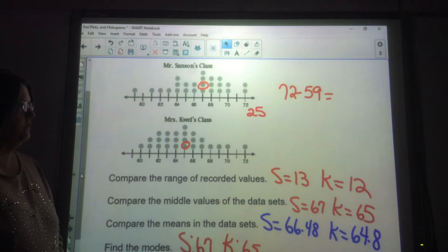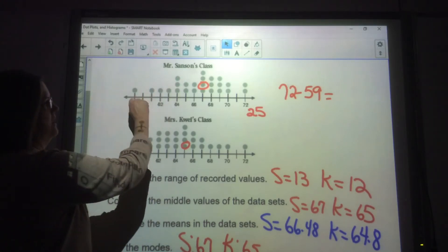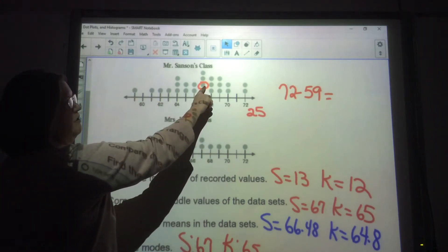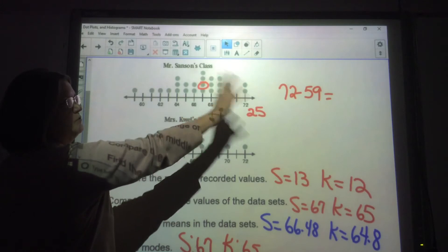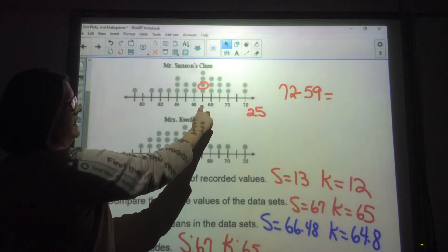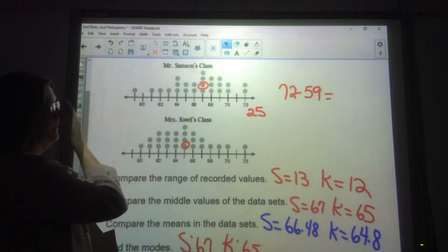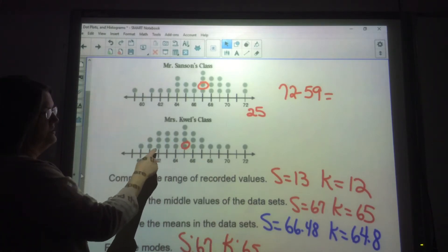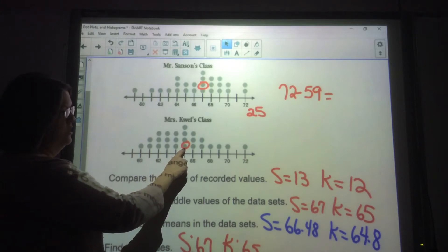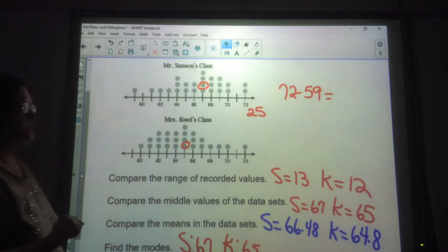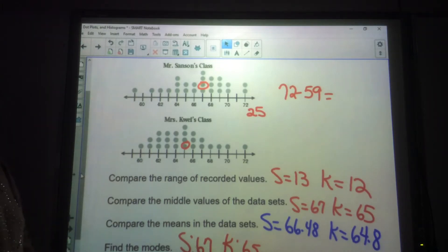And then it says compare their middle values. And really all you have to do is just count how many values you have. There are 25. That means the 13th value is the one in the middle because you've got 12 on both sides. And that is at 67. So his is at 67. Mrs. Quay's class, she has 25 as well. The 13th piece of data here is 65. So Mr. Sanson has a higher median than Mrs. Quay does.